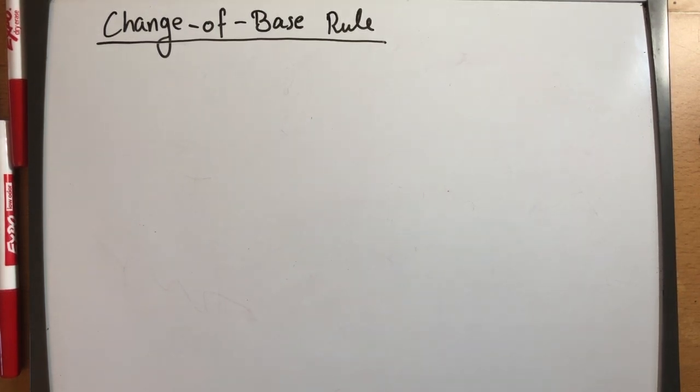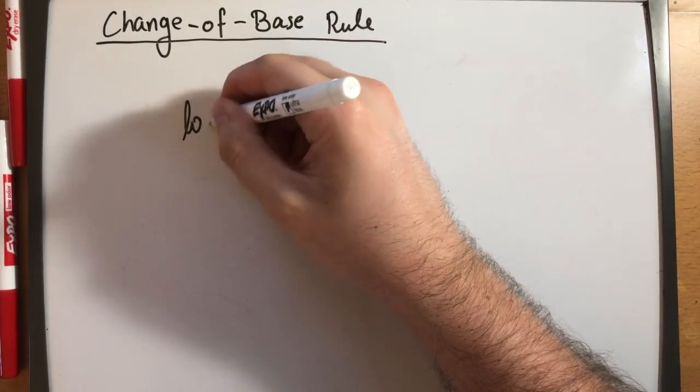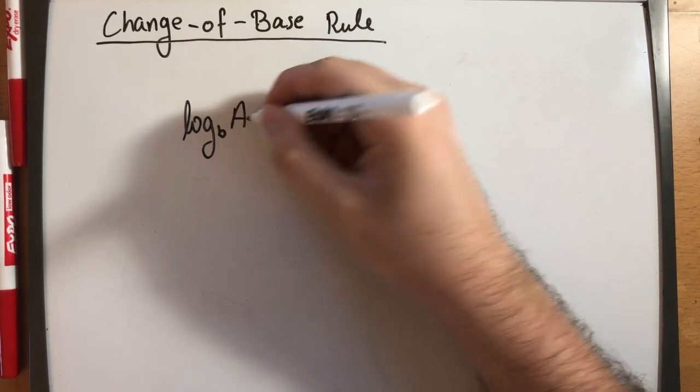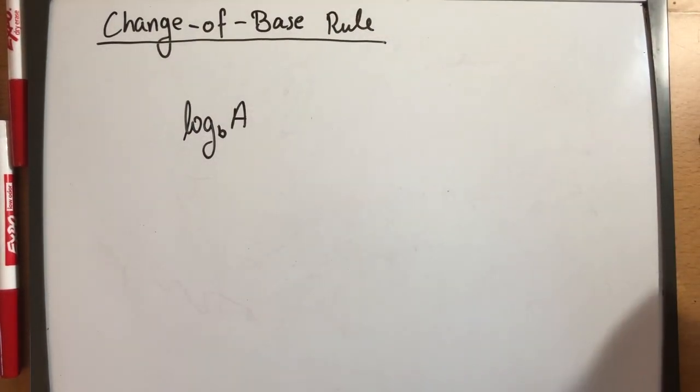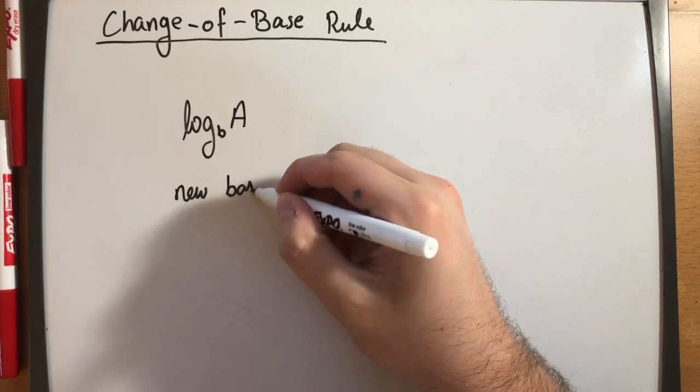Now the change of base rule is this. Let's say that we have log base B of some number A and I want to change it to the new base C.